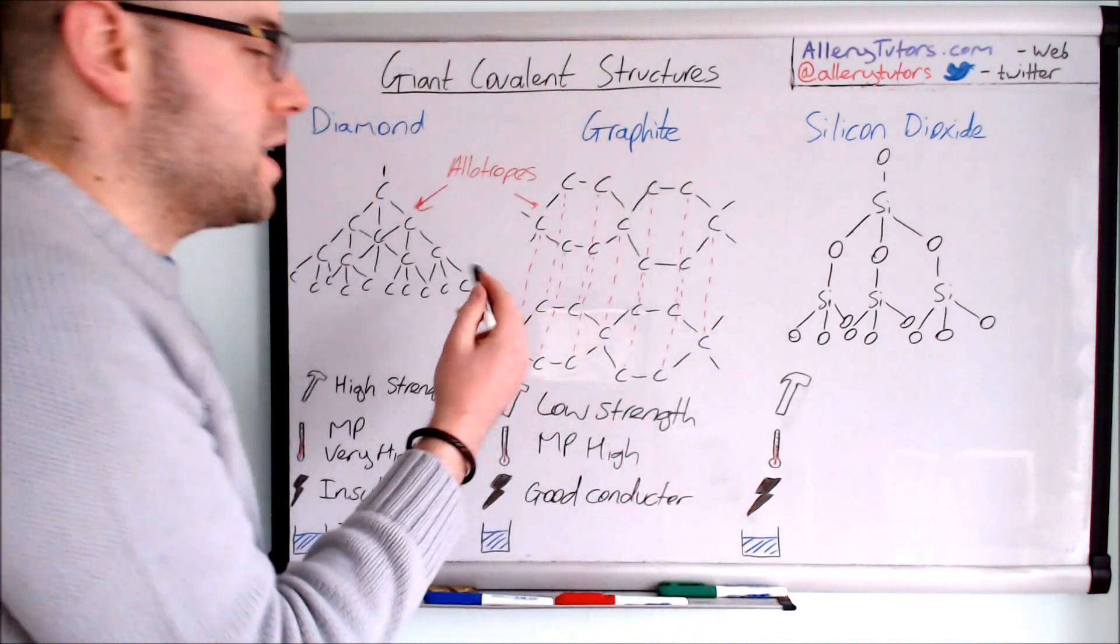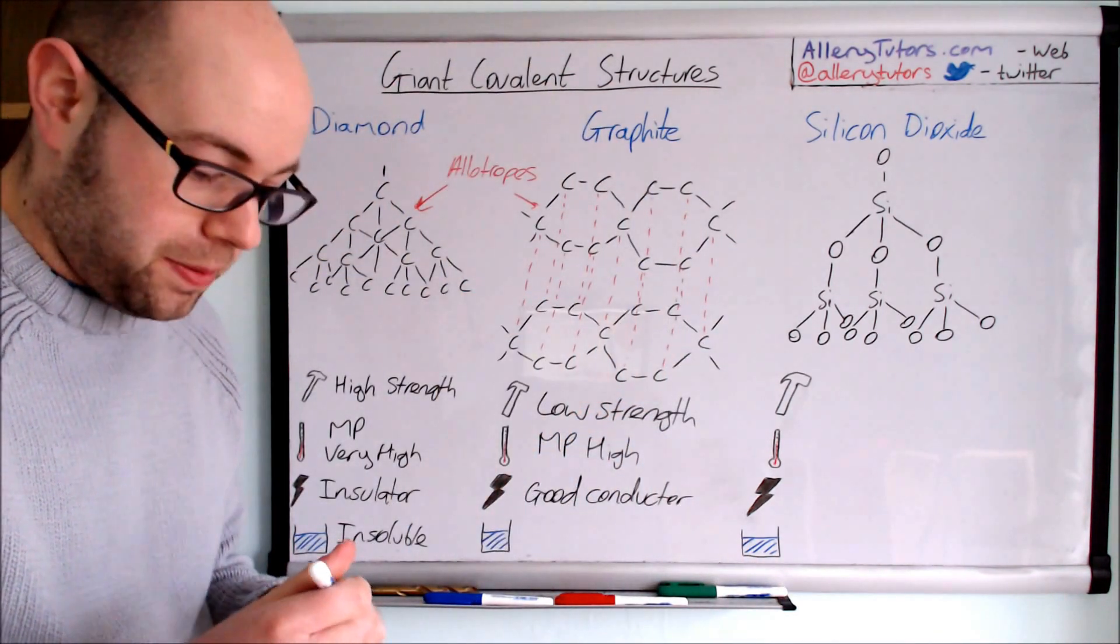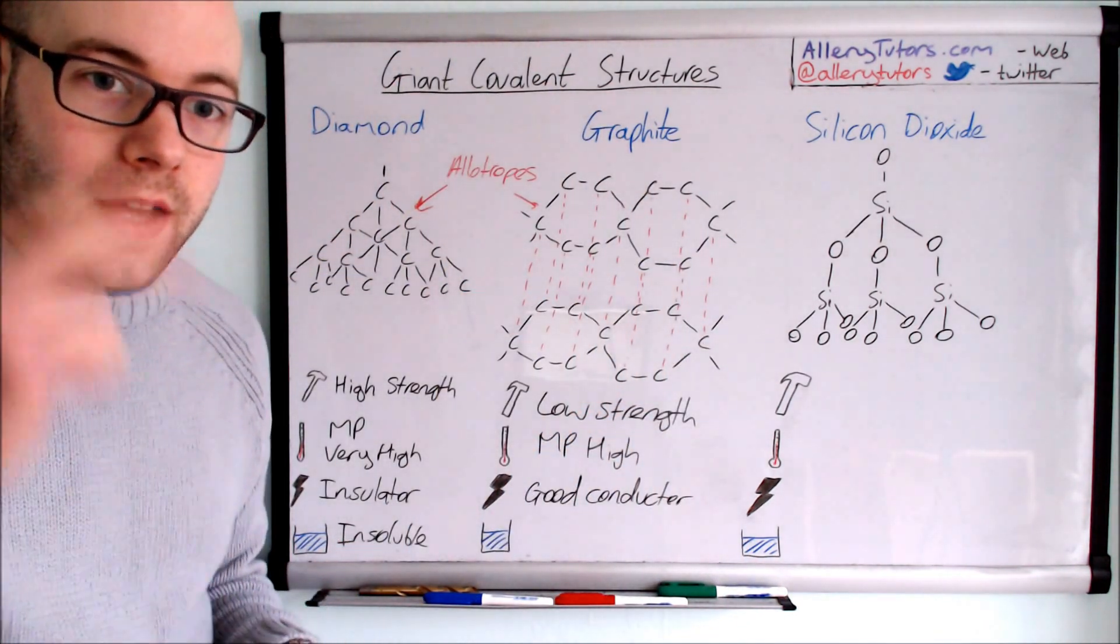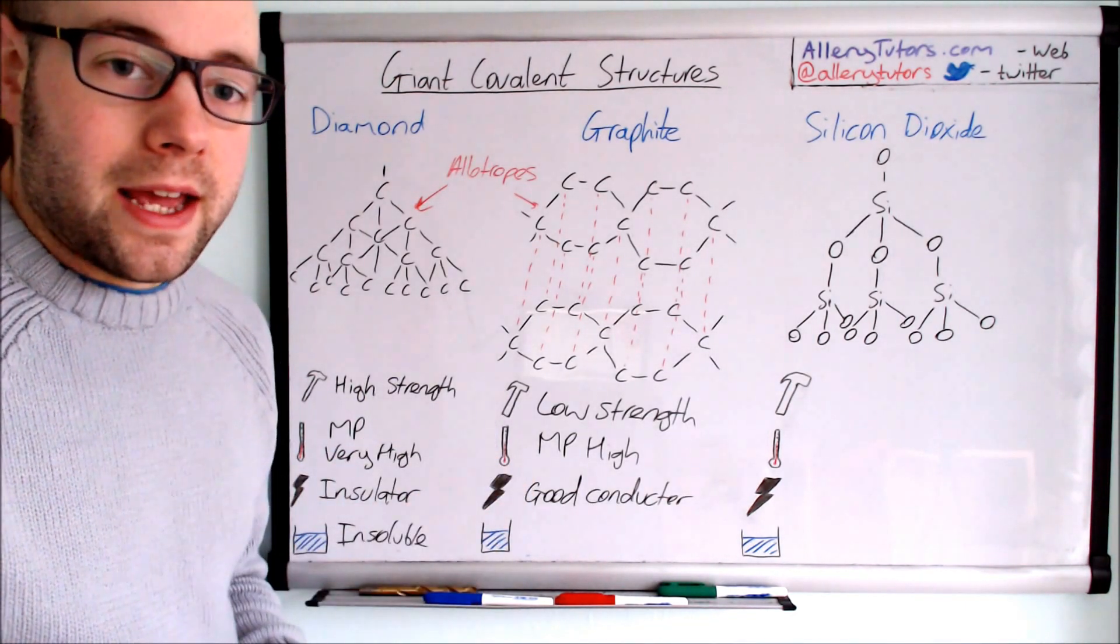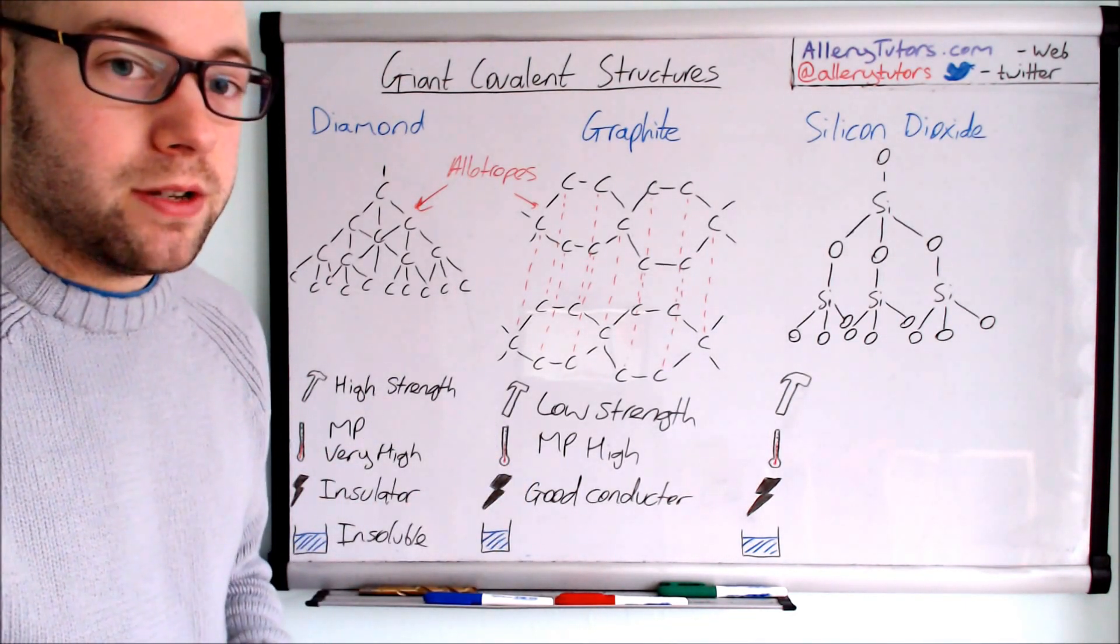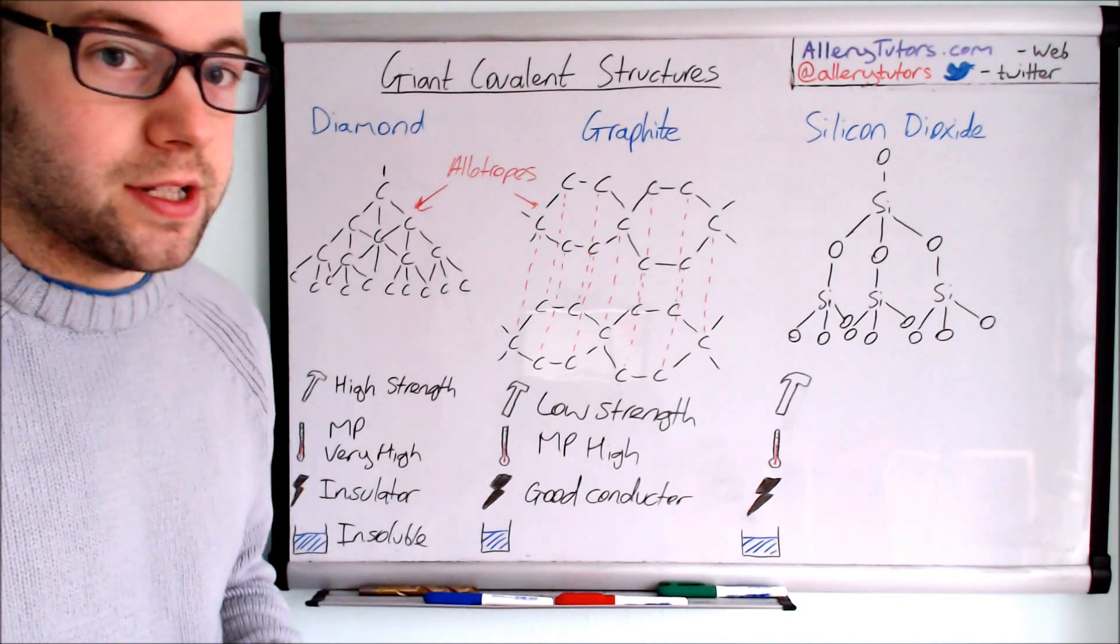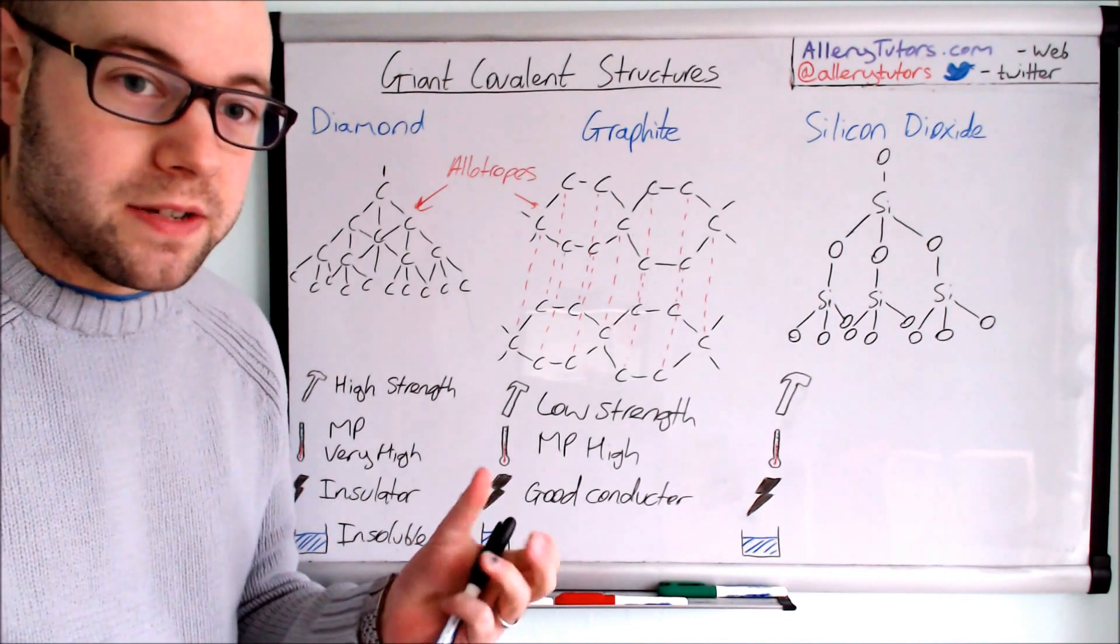If you take one layer off the top, you form something called graphene. Graphene is a really thin layer of carbon that can be used and is starting to be used in the electronics industry to develop even thinner devices.